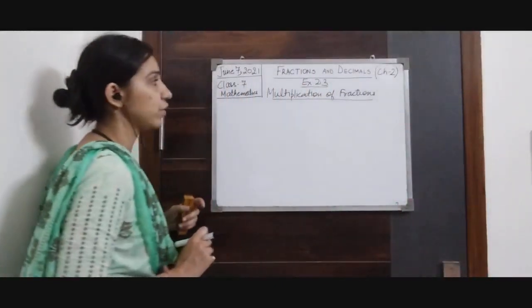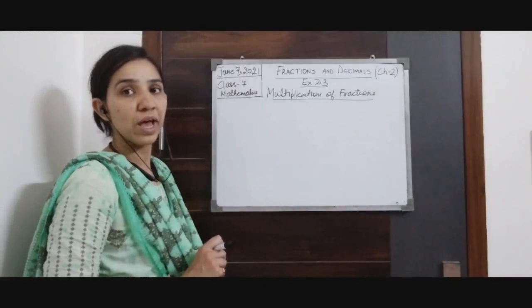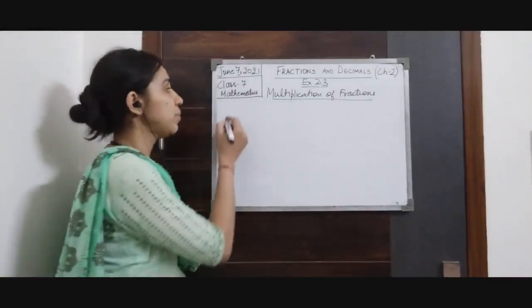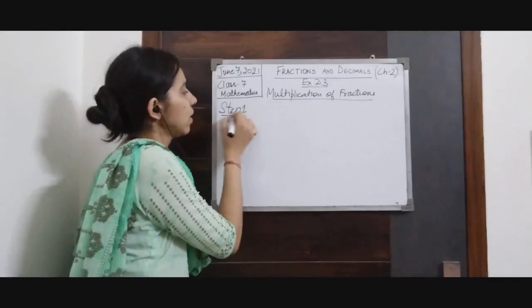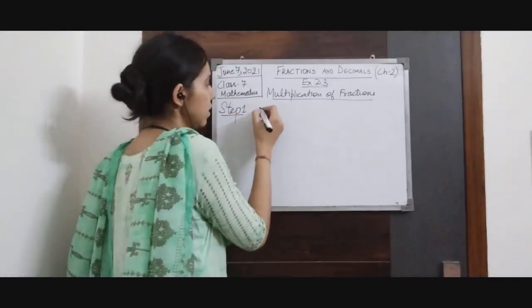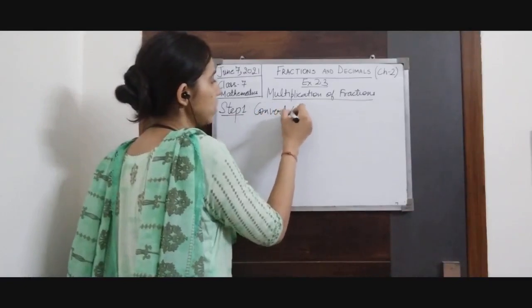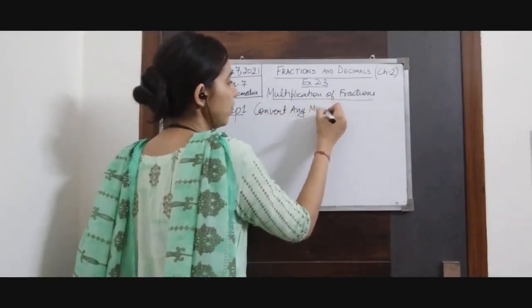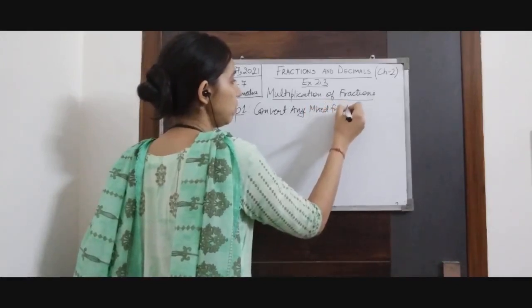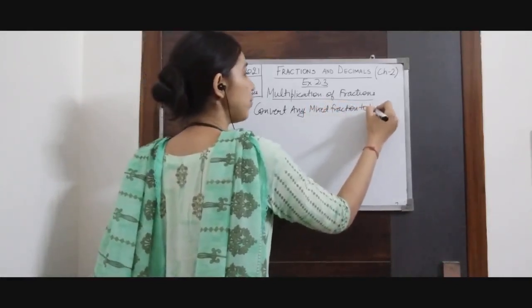Now we will be doing multiplication of a fraction with another fraction. For this we have 4 steps. Step number 1 is: convert any mixed fraction to improper fraction.